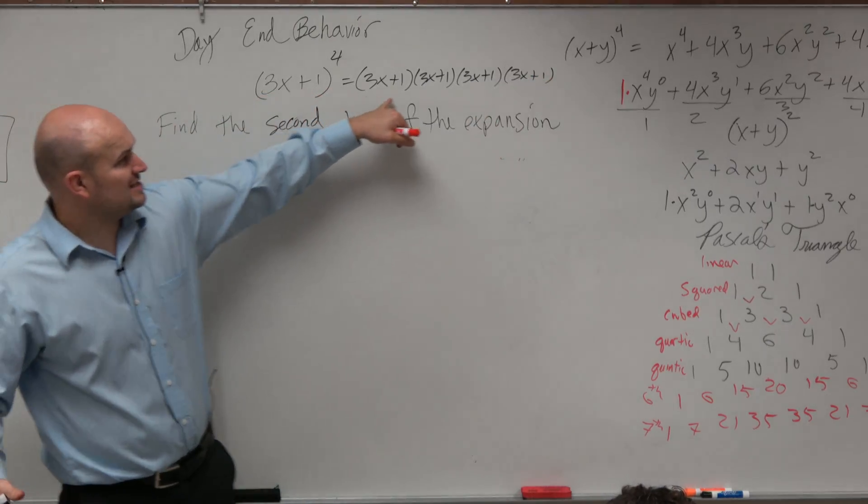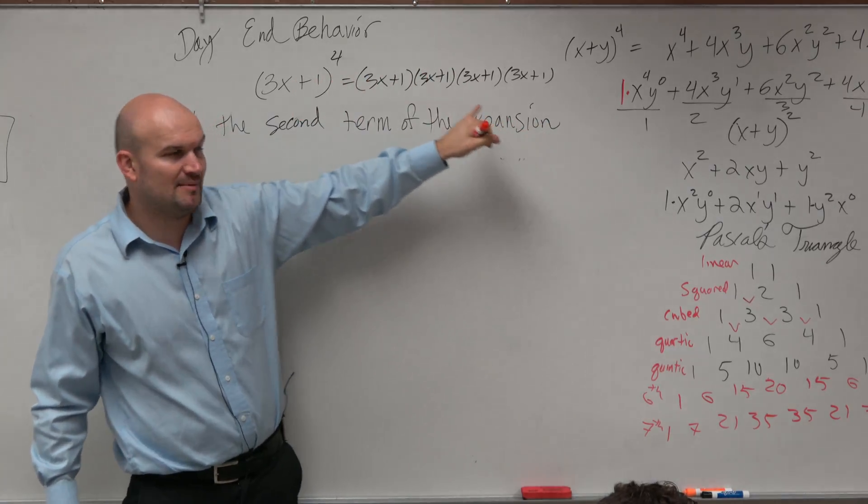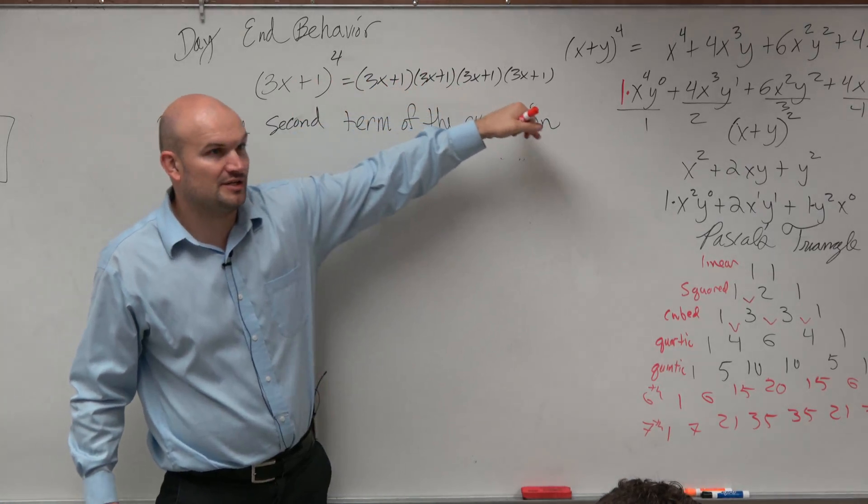You guys, I think, would all agree that the x is going to go into the fourth, right? Yes. But how many times, if I were to multiply this all out, how many times would I be multiplying these threes by each other? Four.